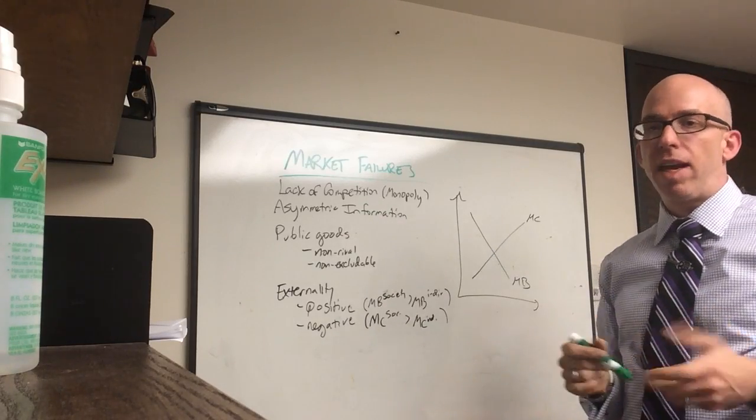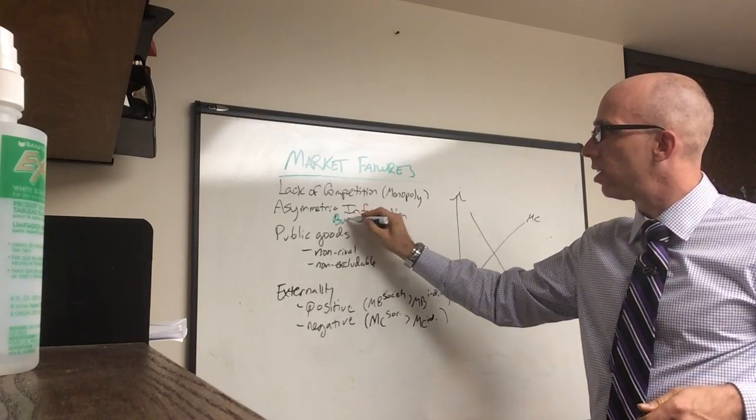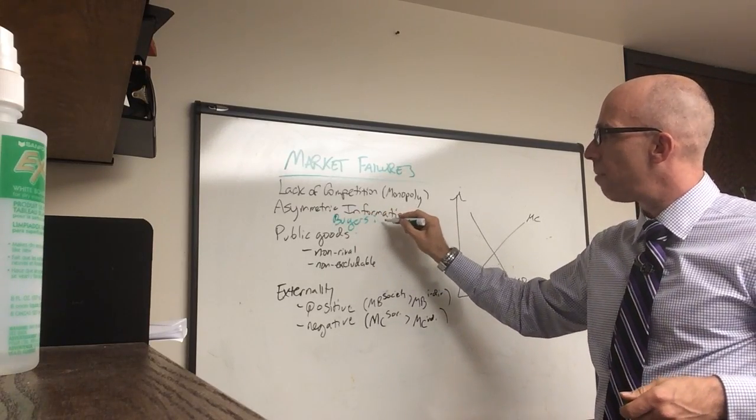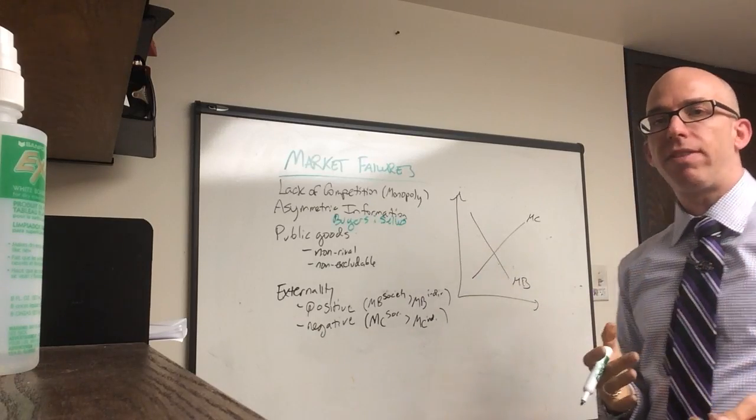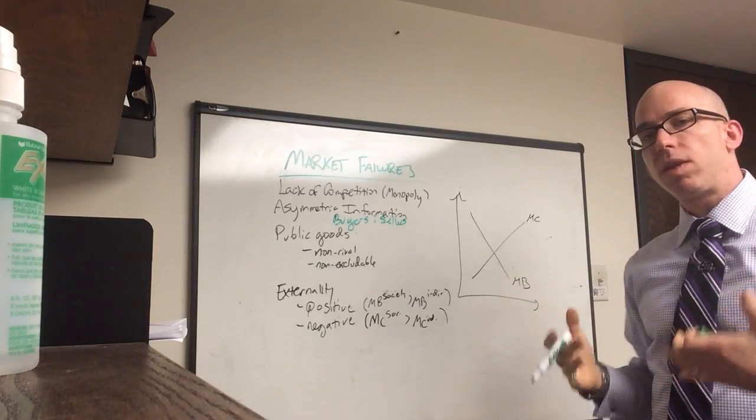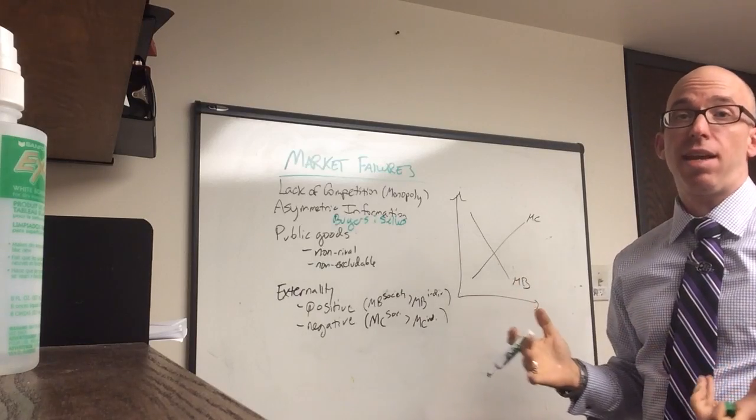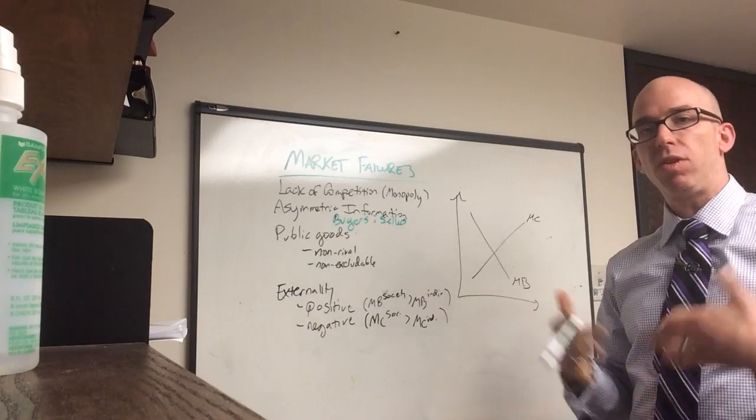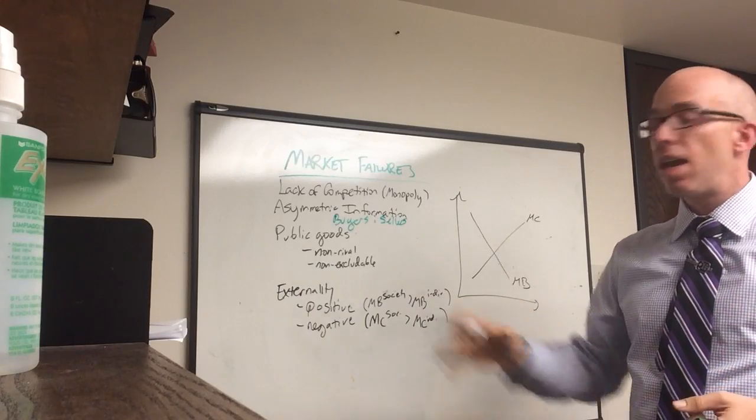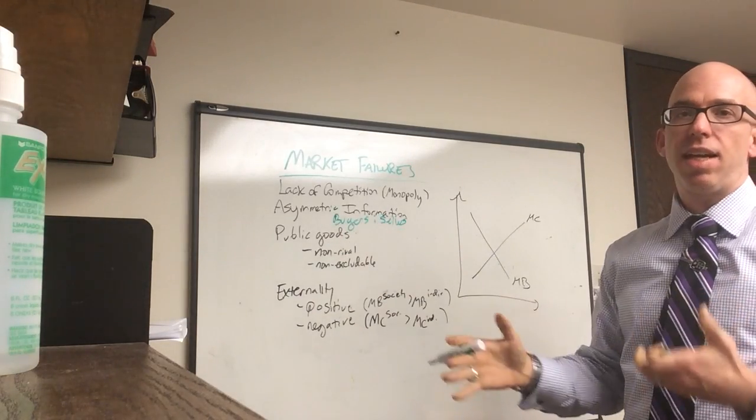Secondly is asymmetric information. That's basically buyers and sellers, and that means that the two sides of the transaction do not have the same amount of information. This particularly matters with the banking sector because people who take out loans know if they'll be able to pay back, they know their income, they know their financial situation.